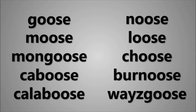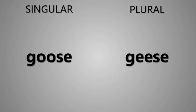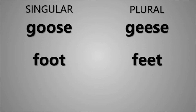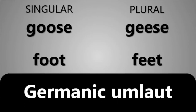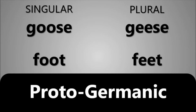Goose is unusual in having the plural geese. Plurals like this, where the vowel sound changes, come about because of the Germanic umlaut, a type of vowel change which occurs in Germanic languages. This means some words, such as goose and foot, which come from Proto-Germanic, have vowel alternations between singular and plural.